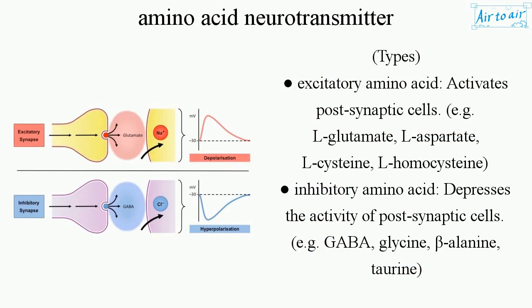Types — Excitatory Amino Acid: activates post-synaptic cells. Examples include L-glutamate, L-aspartate, L-cysteine, and L-homocysteine. Inhibitory Amino Acid: depresses the activity of post-synaptic cells.